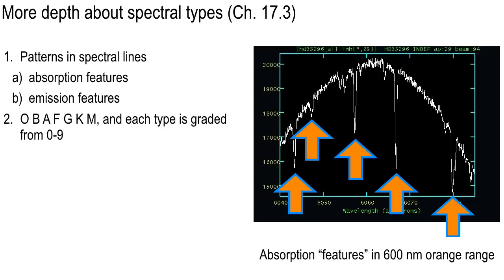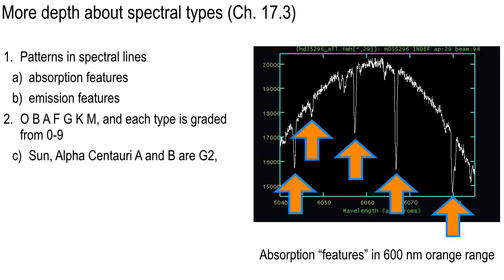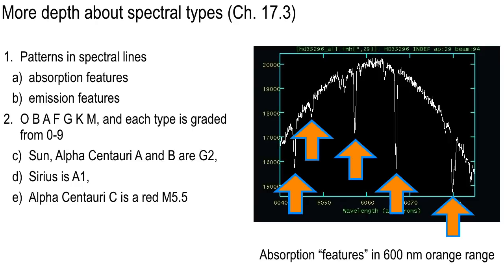Each spectral type is graded from zero to nine — ten groups. The Sun and Alpha Centauri A and B are G2s. They're a little bit redder than a G0, a little bit bluer than a G4. All the spectral classes — B1, A0, F4 — you can have all kinds of those and look them up on the internet. For instance, Sirius is A1. Alpha Centauri C is an M5.5 — pretty red, down in the middle of the reds. It's the closest star to us, also called Proxima Centauri.